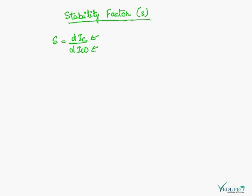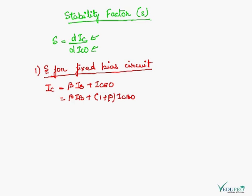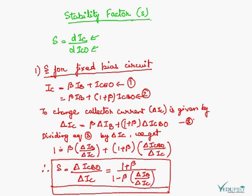Now we will see the stability factor for each biasing circuit. First, we will see the stability factor for fixed bias circuit. As we know, IC in fixed bias circuit is equal to beta IB plus the leakage current ICEO, and it is also denoted in terms of ICBO as (1+beta)ICBO. So these are the two equation relations with IC.